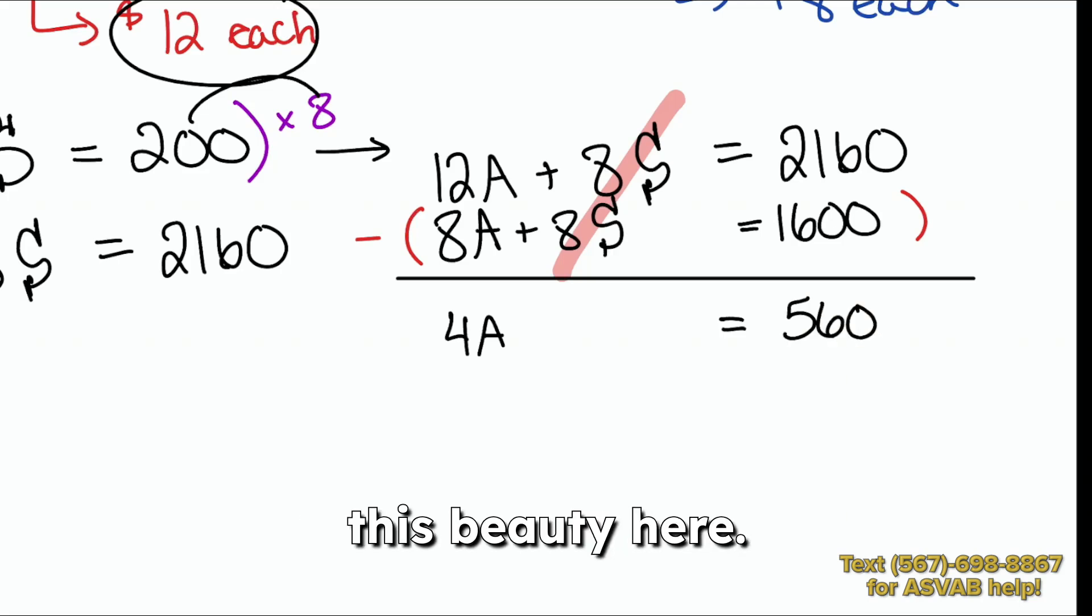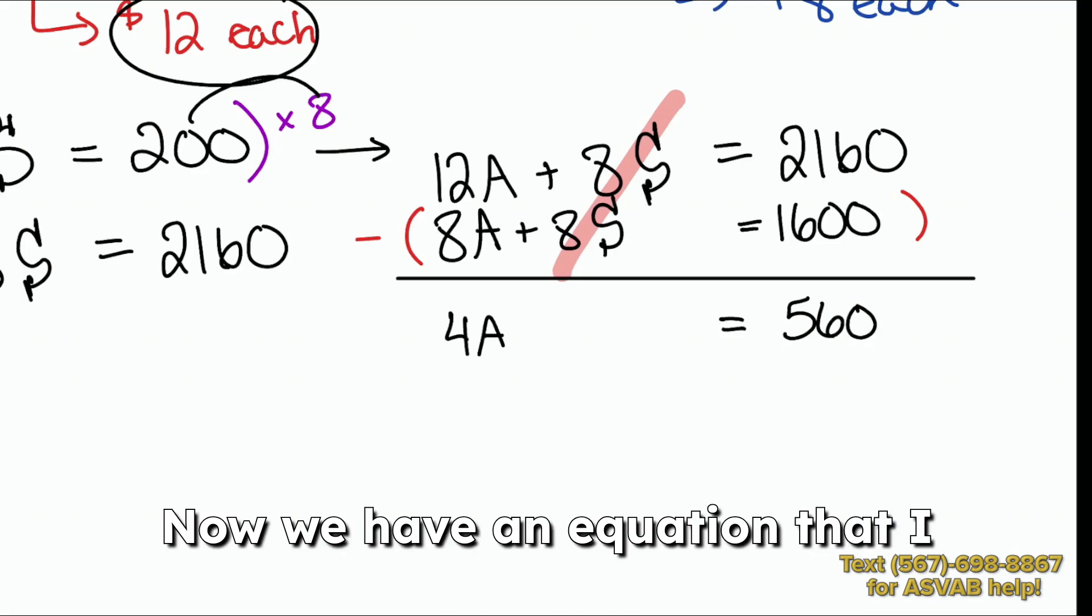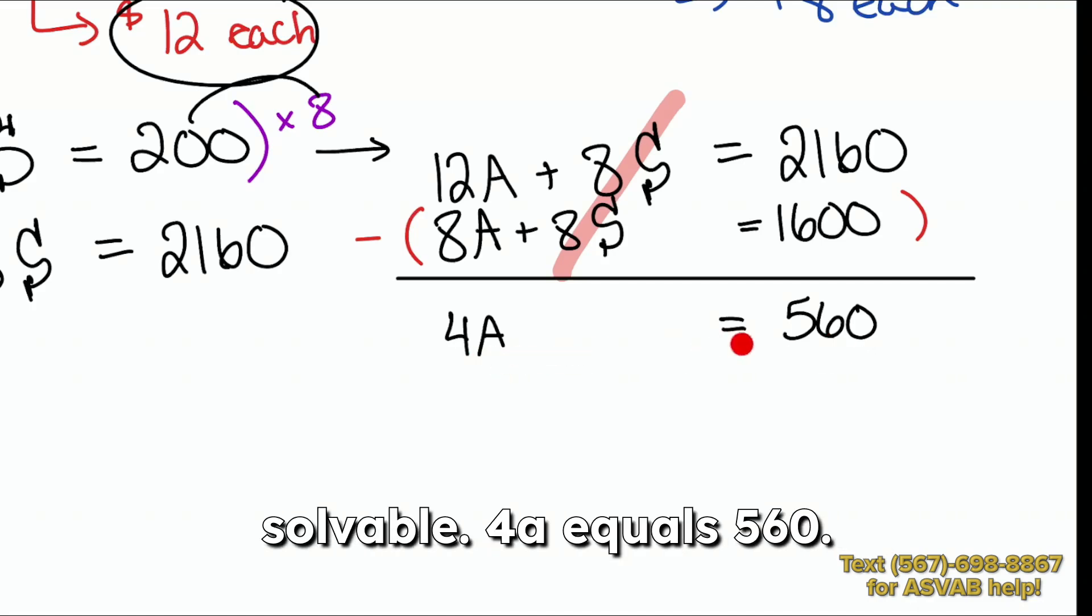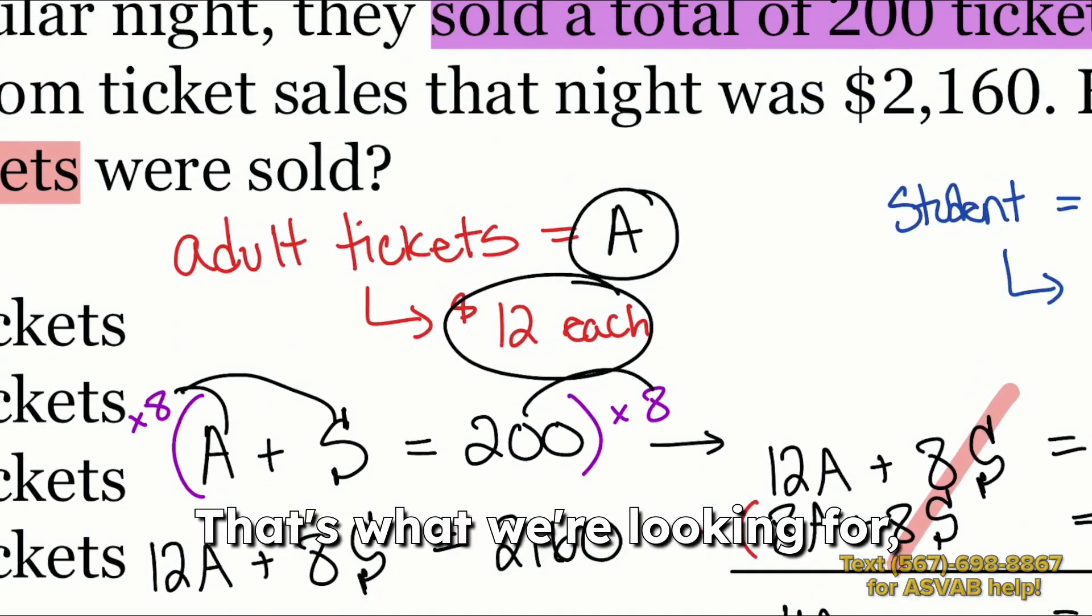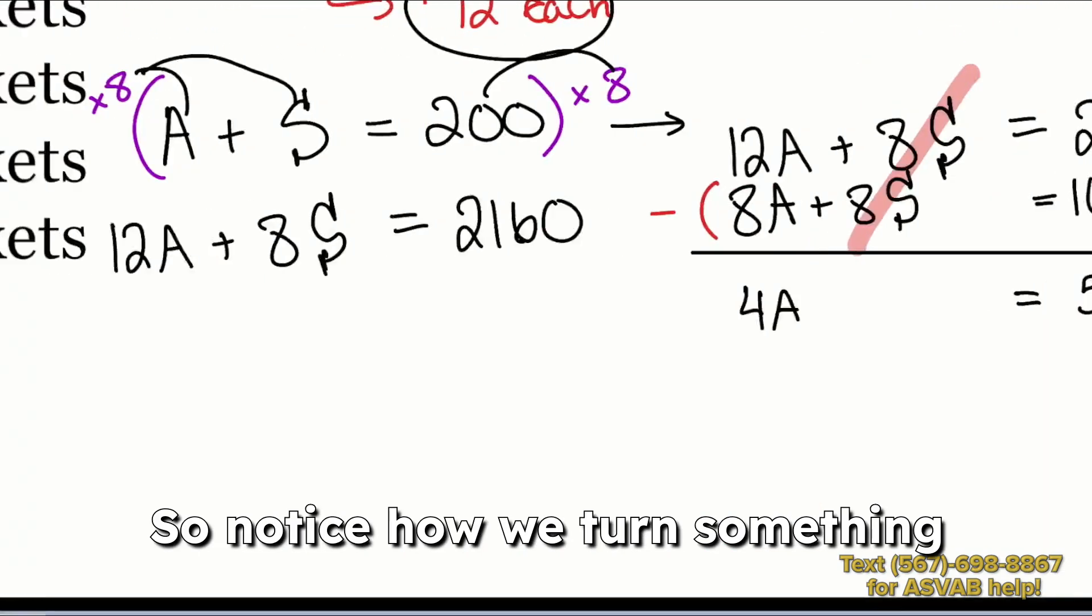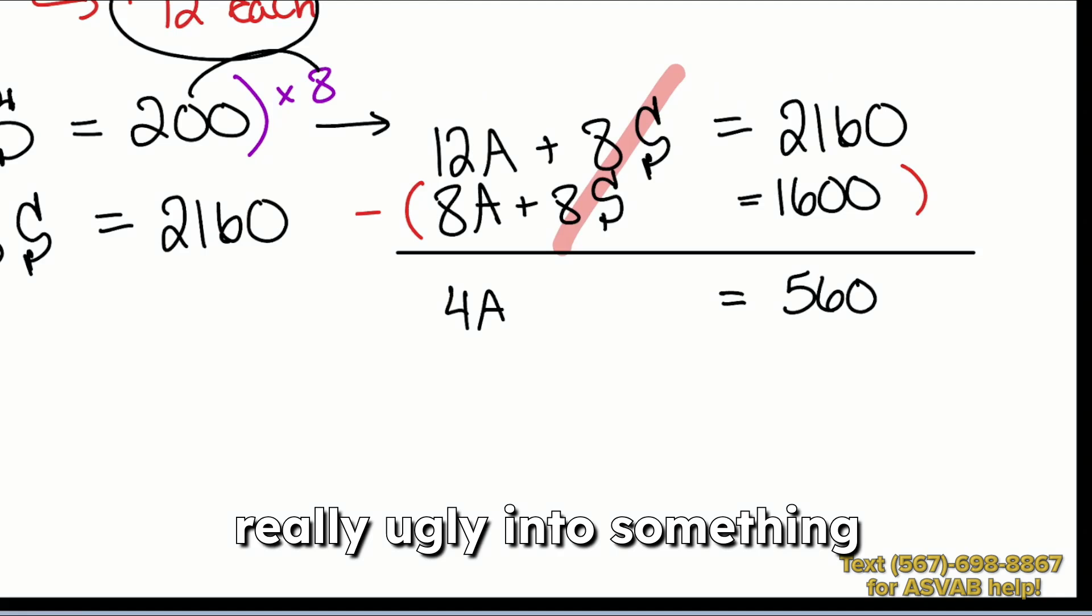And so take a look at this beauty here. Now we have an equation that I think we can all agree is very solvable. 4A equals 560. When we solve this, we'll get A by itself. And guess what? That's what we're looking for. The number of adult tickets.